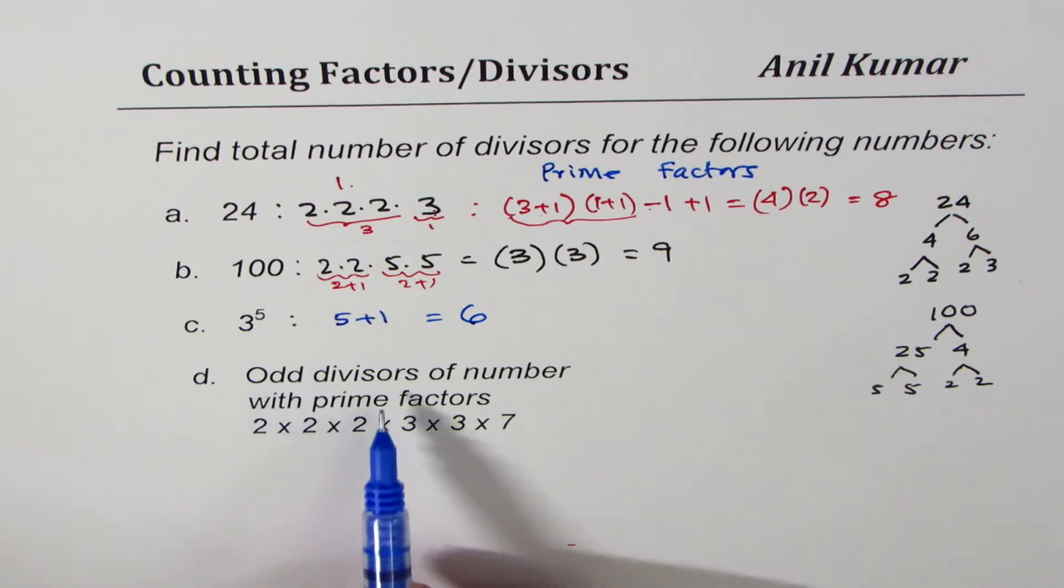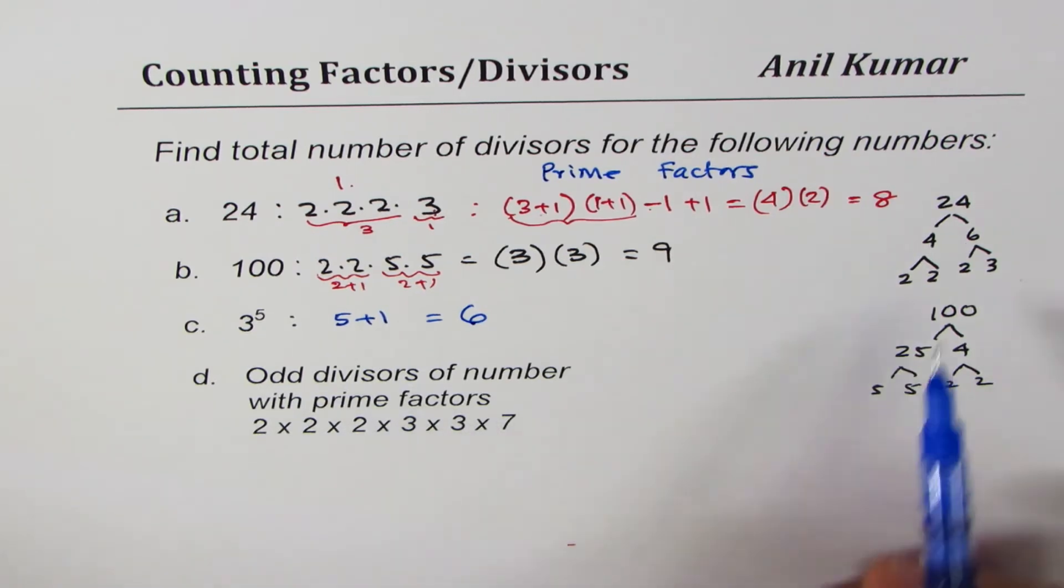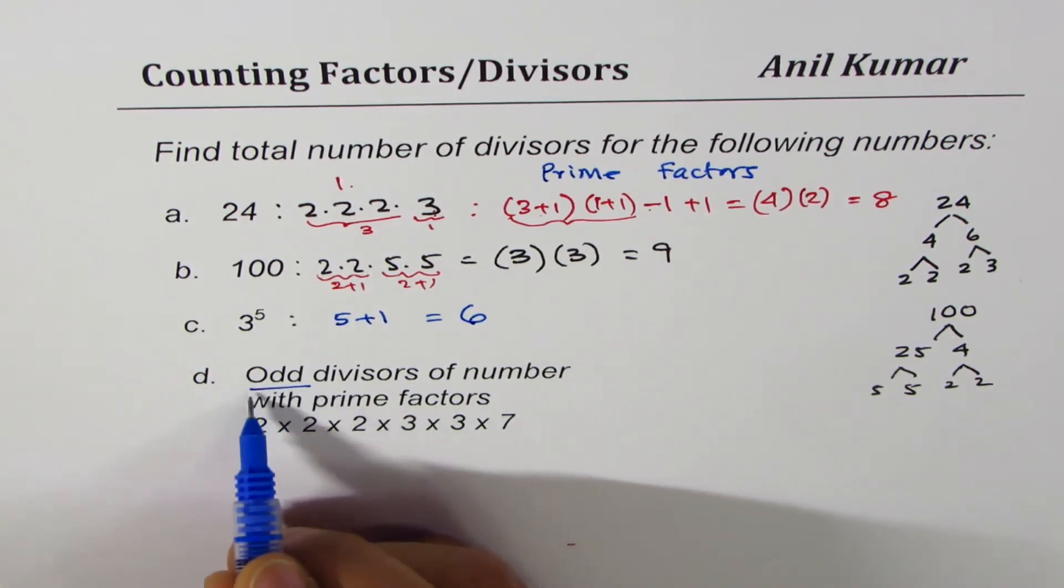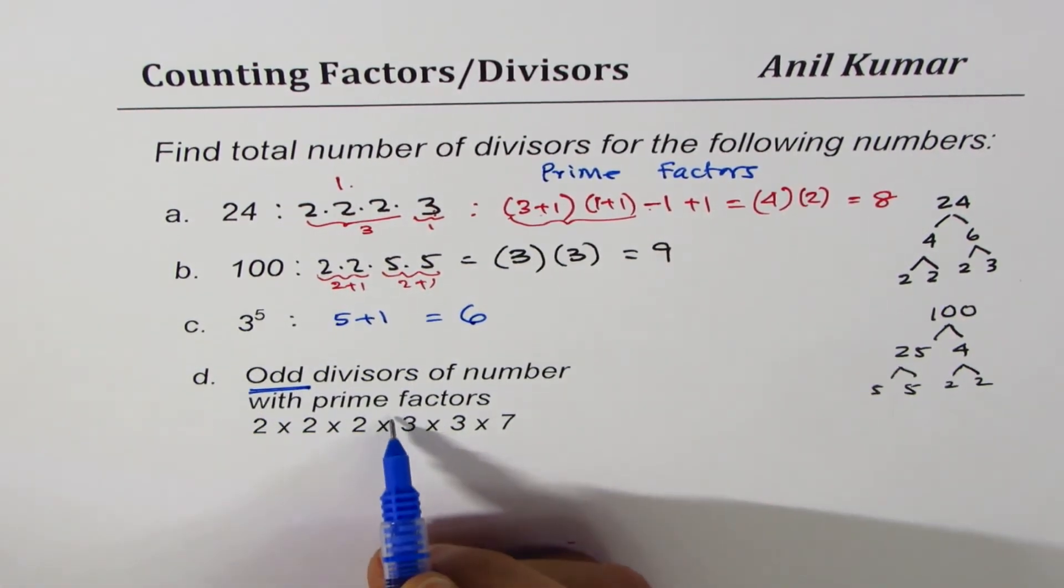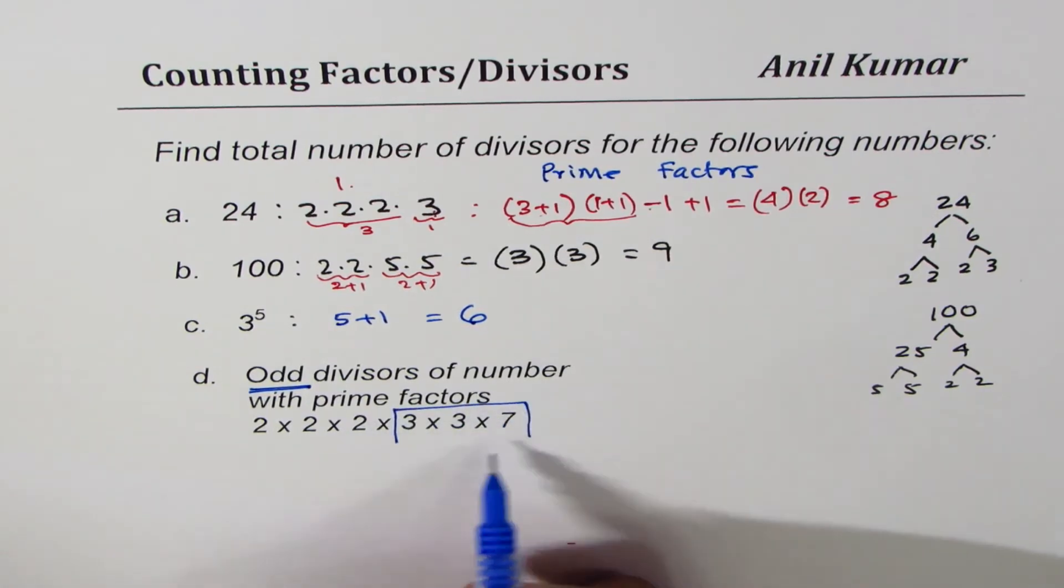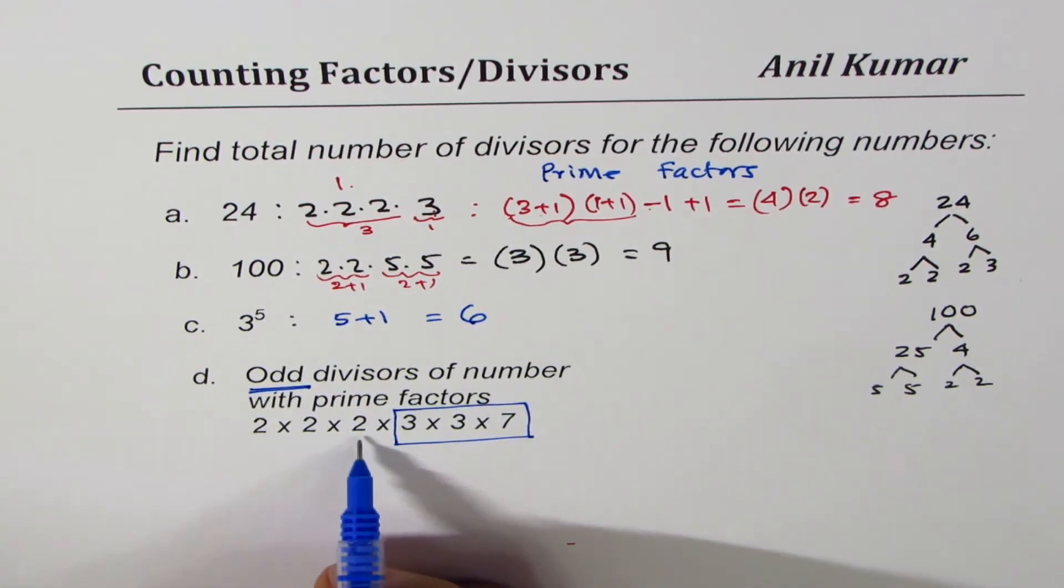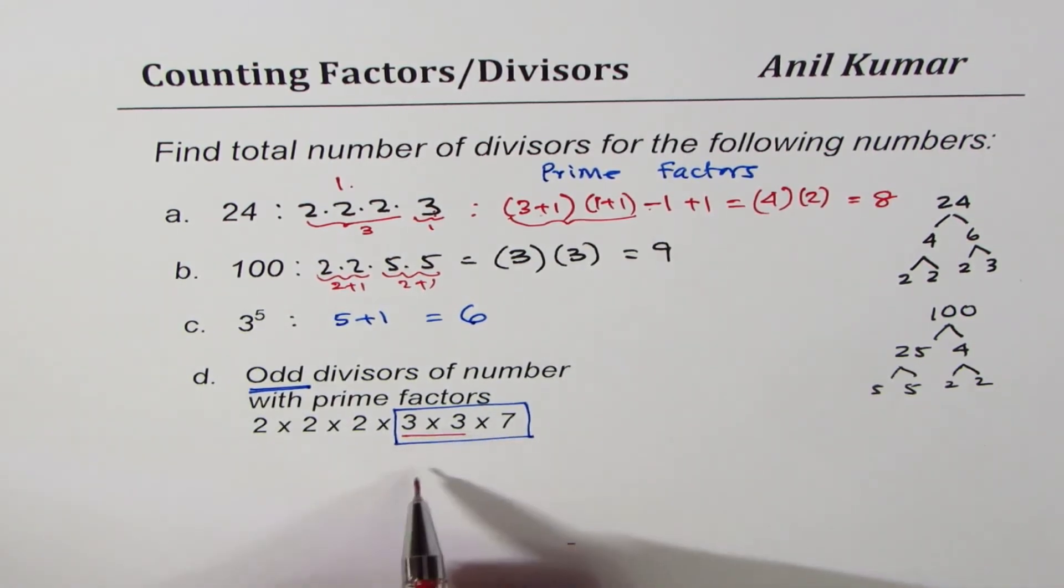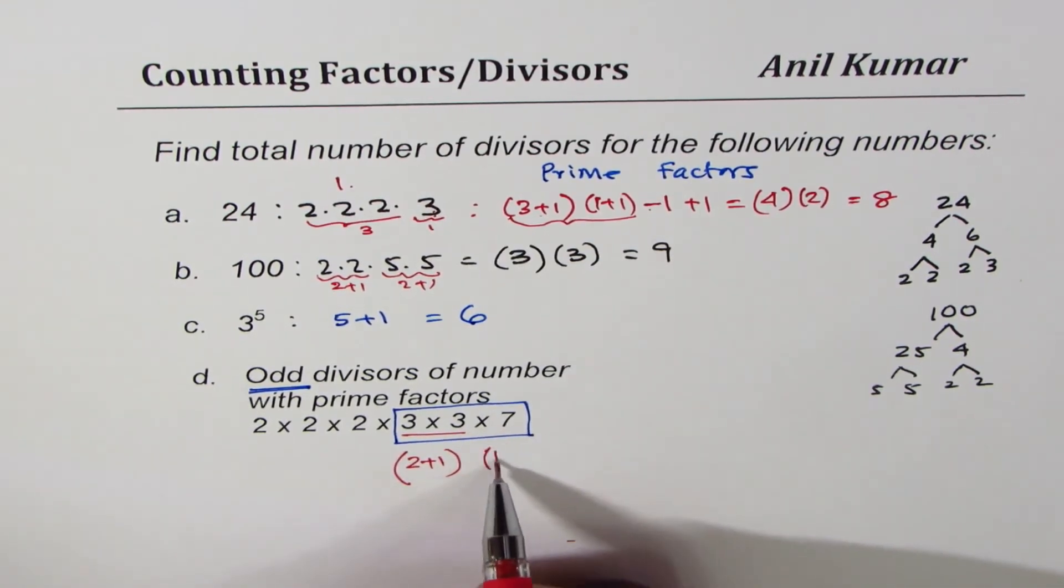Last one here is odd divisors of the number with prime factors 2, 2, 2, 3, 3, 7. In this case we do not have to do prime factorization, we already have all the factors, right? So since we need to look for odd divisors we will only concentrate on these numbers. Multiplying by 2 makes it even. Now here what do we have? We have 2 3's so that gives us 2 plus 1 combinations, 1 7 gives 1 plus 1 combinations.